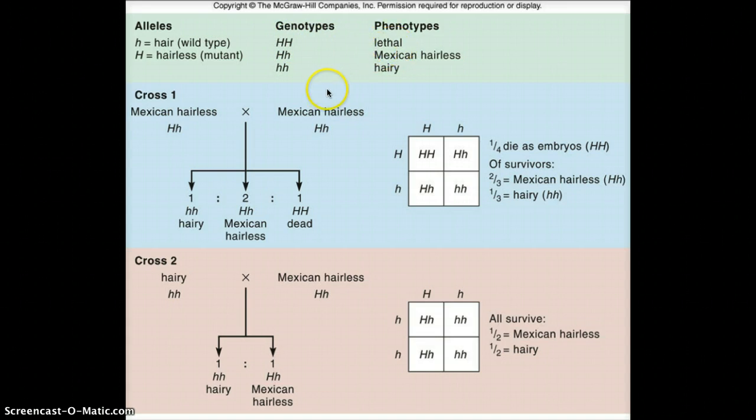So there are some crosses down here and some Punnett squares. So here they're crossing a heterozygote with a heterozygote. And so we're going to get the same genotype ratio as normal.